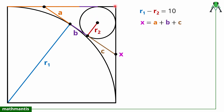Coming back to this circle, from this point we have drawn two tangents, so these two tangent lengths will be equal. This is the center of this circle and this is tangent to the circle — we can draw a perpendicular from here which meets at these two points. This length is r2 and this length is also radius r2. This angle is also 90 degrees, so this shape is nothing but a square — because in a rectangle if adjacent sides are equal, it is a square. So the length of tangent from this external point will also be equal to radius r2.